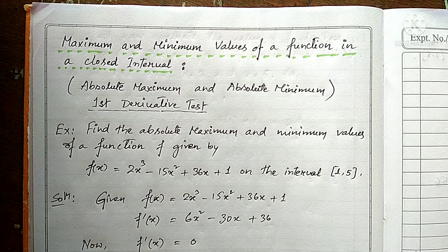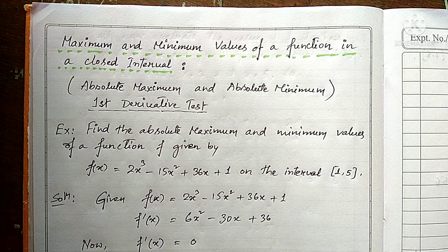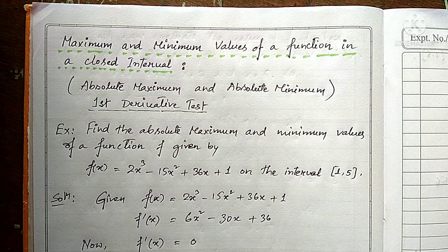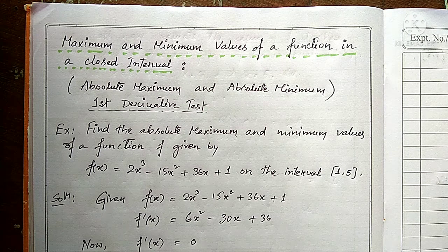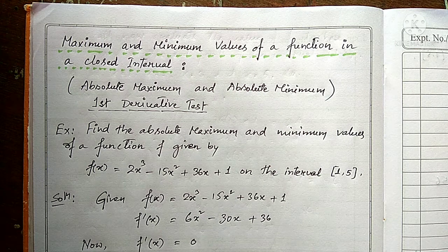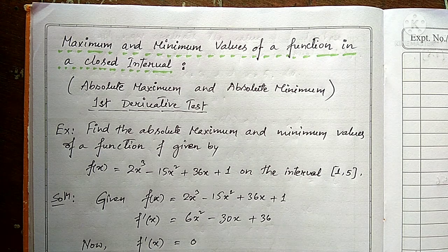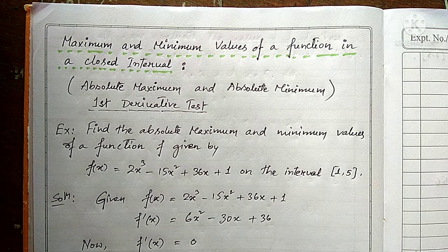Good morning students. In our last class we discussed maxima and minima — turning points and how to find maximum and minimum values. We covered three methods: absolute maxima/absolute minimum, local maximum/local minimum, and simply maximum and minimum. The first two are under the first derivative test, and the third is under the second derivative test.